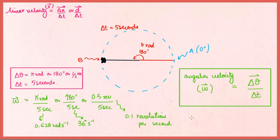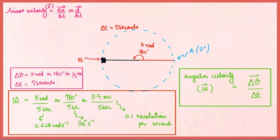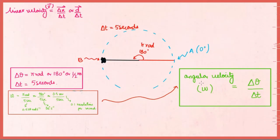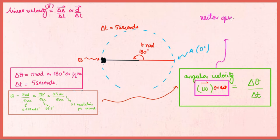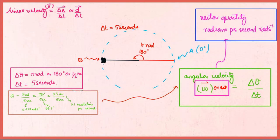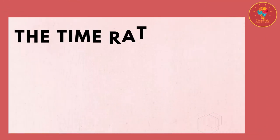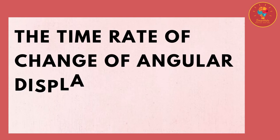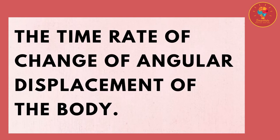This is defined as angular velocity, represented by omega with an arrowhead or bold omega. The symbol is very close to 'w' but it is not 'w'. It is a vector quantity like linear velocity, and its SI unit is radians per second. Angular velocity is defined as the time rate of change of angular displacement of a body.